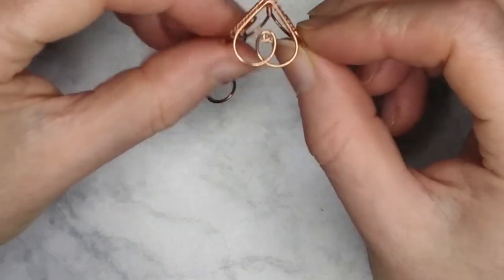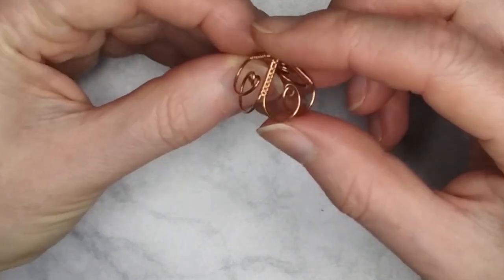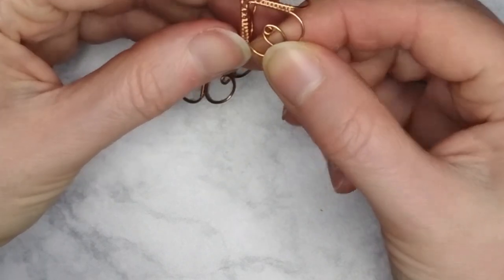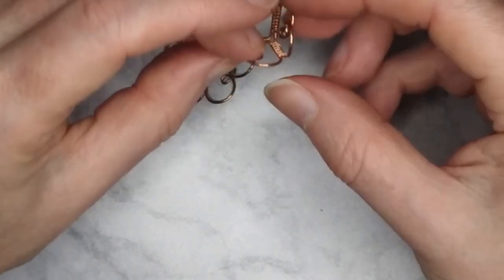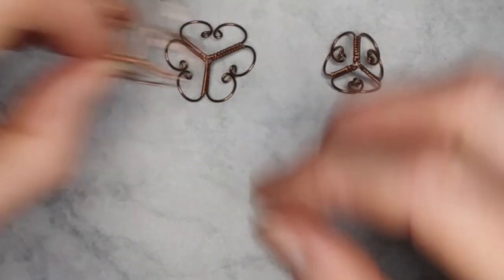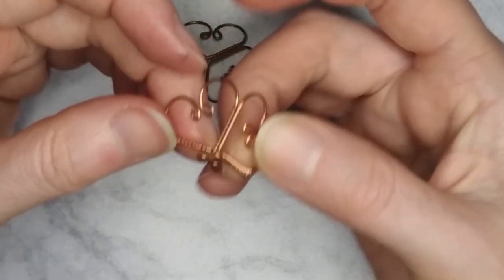The pendant is started by wrapping three shapes together in the same way. Repeat the process with another three hearts.